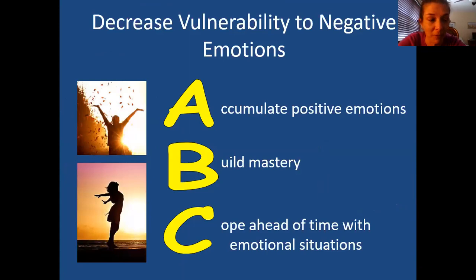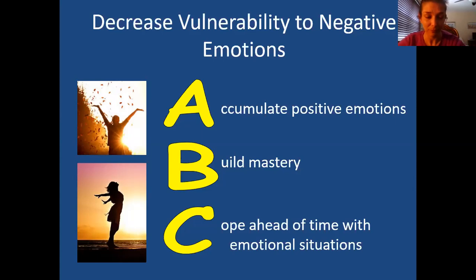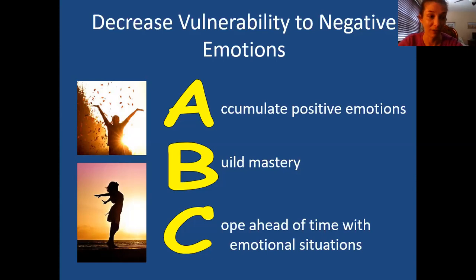So first — decrease vulnerability to negative emotions. We start with the ABC skill. The A is accumulating positive emotions — doing things or shifting your attention to the positive in the short term and long term so that you have that cushion. When the stressor comes your way, there are positive things in your experience that make the negative stuff feel less overwhelming. If I have a background of some positivity, the stressor doesn't completely take over and really ruin my day. Building mastery is the B — doing things that make me feel good about myself, like I'm accomplishing or achieving something. That provides another positive background that can help prevent a stressor from taking over and destroying my day.